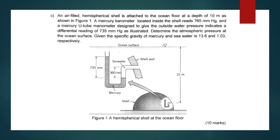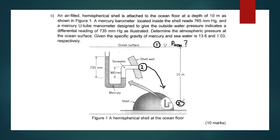For this question we have to find what is the atmospheric pressure at the ocean surface. I will label point number 1 at the surface and point number 2 before it enters the manometer. We have to find atmospheric pressure, so in our Bernoulli's equation we cannot zero out P atmospheric. Therefore all values in the calculation for pressure must include atmospheric pressure.